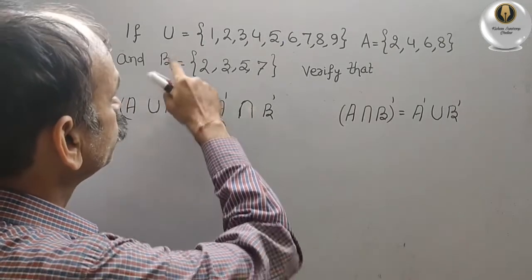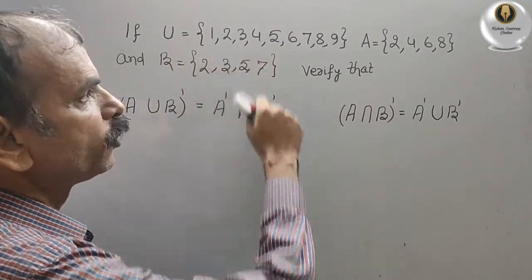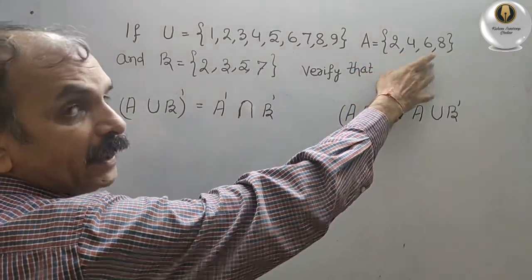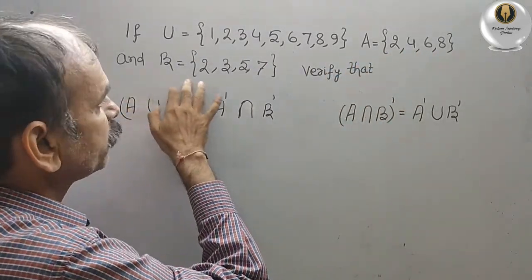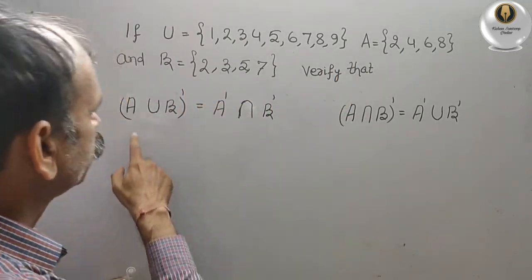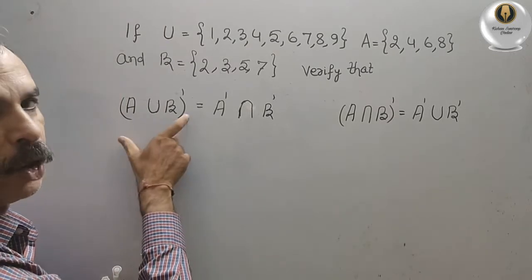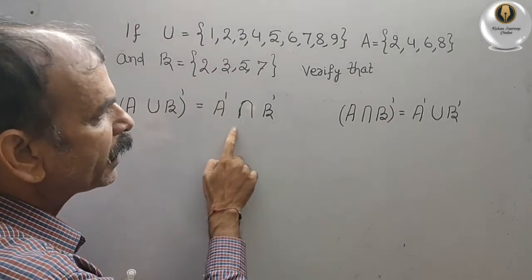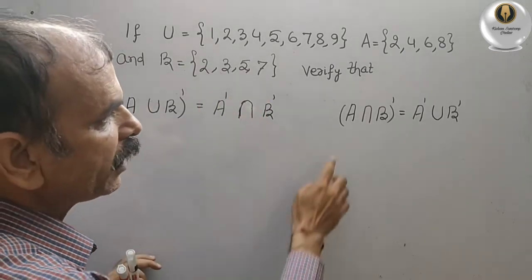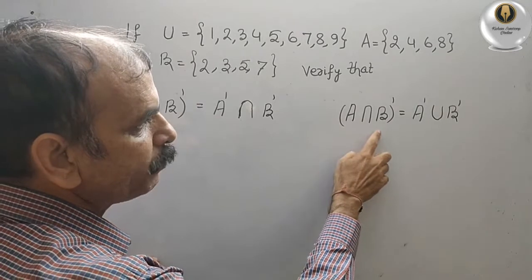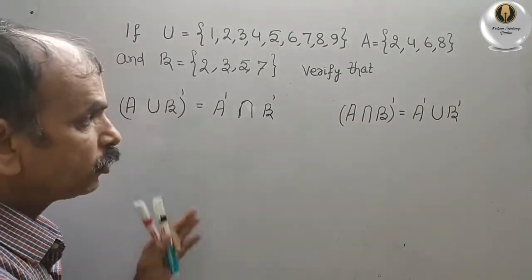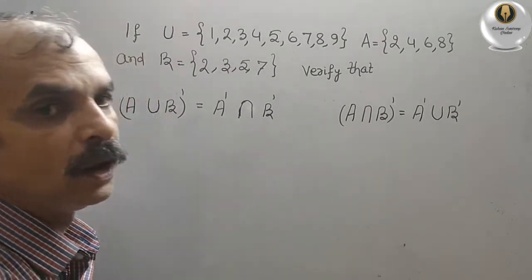Your question is: if U is equal to {1,2,3,4,5,6,7,8,9}, A is equal to {2,4,6,8}, and B is equal to {2,3,5,7}, verify that A union B complement is equal to A complement intersection B complement, and A intersect B complement is equal to A complement union B complement. This is De Morgan's law that you have to verify.